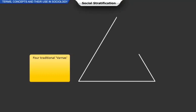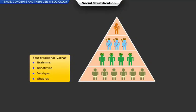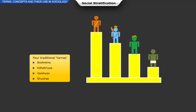There were basically four traditional Varnas: Brahmins, Kshatriyas, Vaishyas, and Shudras. The Brahmins were situated at the highest position of the caste hierarchy and were considered to be the purest of all. The Panchamas, who were referred to as the outcastes, were the most inferior ones.